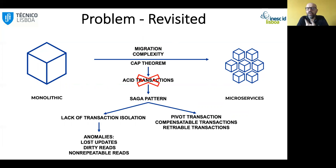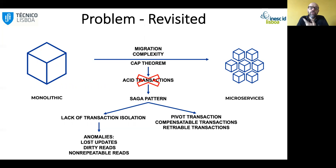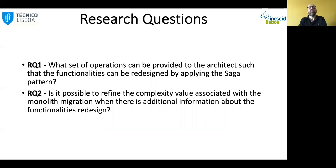For that you have, for instance, pivot transactions. These are transactions that define the point where, if their execution succeeds, the functionality is going to succeed and will not roll back. But you may need to compensate if something occurs before the pivot transaction, and the transactions afterwards are retriable transactions. So there are two research questions: first, what set of operations can we provide to the architect such that the functionality can be redesigned by applying the saga pattern?